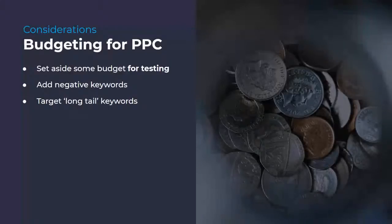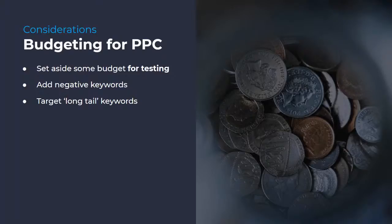So when it comes to budgeting for new PPC campaigns, there are a few things to consider. First, when running a new PPC campaign, set aside some additional budget for testing — this will allow you to identify what works before scaling ad spend. We'd also suggest adding negative keywords before your campaigns go live to ensure that you're not targeting any keywords which aren't relevant. And if you are working to a smaller budget, target long tail keywords — this will allow you to go after relevant traffic but with typically lower cost per clicks.